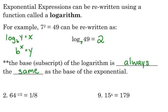So where the 2 was with the 7, with the exponential, now the 2 is by itself. And the 49 is with the 7. Does that kind of make sense?